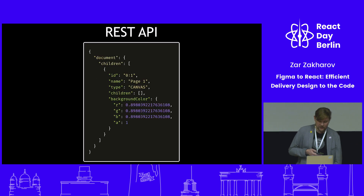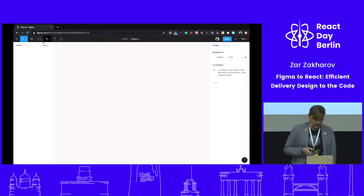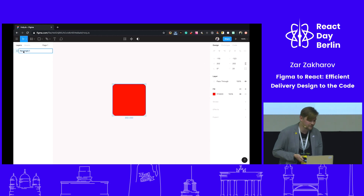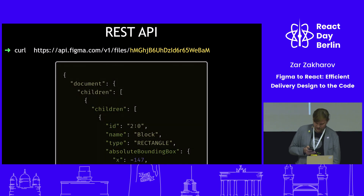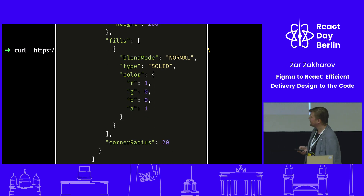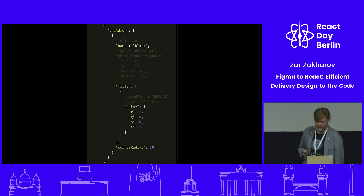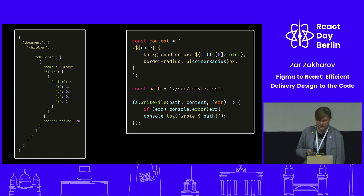If we go deeper into the JSON, it looks like this — you can see children. Now let's fill it. Draw a square, set the background color to red, set rounded corners to 20 pixels, and rename the rectangle to 'block'. Request the API again and look at the children — many, many fields. In our case we need only name, fill, and corner radius.